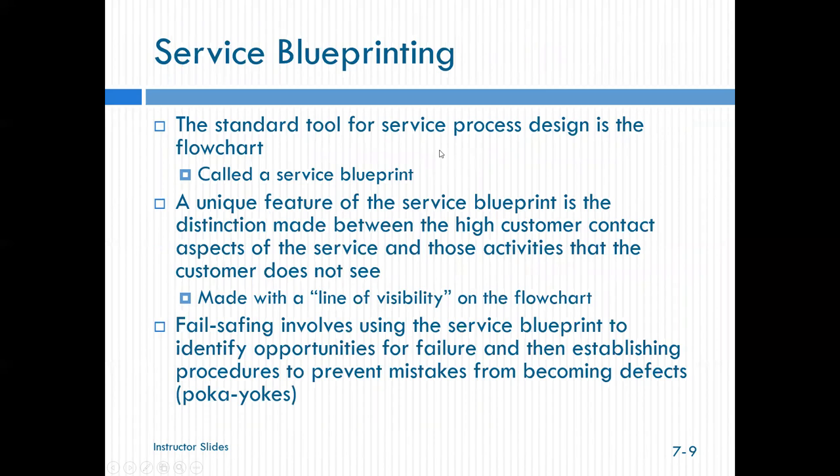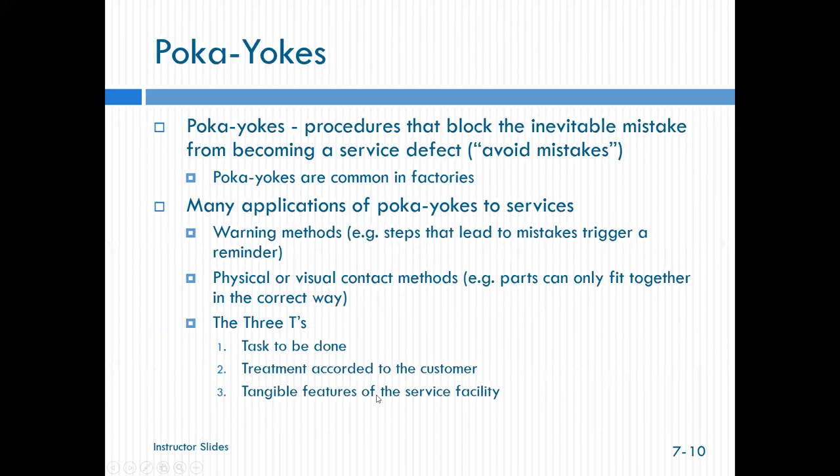In manufacturing we talk about process flow charts. In services, same type of thing, but we talk about service blueprinting. A unique feature of the service blueprint is that we make this distinction between the zone where we have high customer contact and the aspects of the service that are related to that versus those aspects where the customer doesn't see the server. And we draw that with a line of visibility on the flow chart. We use these service blueprints to try to identify areas where we need to fail safe our operation. So how can we help prevent mistakes from becoming defects. And we use a tool called creating poke yolks. It's a procedure that blocks the inevitable mistake from something becoming a service defect. Poke yolk, I think, is the Japanese word loosely interpreted as avoid mistakes. We use poke yolks a lot in factories. We have a go, no go gauge. That's an example of it in services. We have other ways to do that. We might have warnings. We might have physical or visual contact methods.